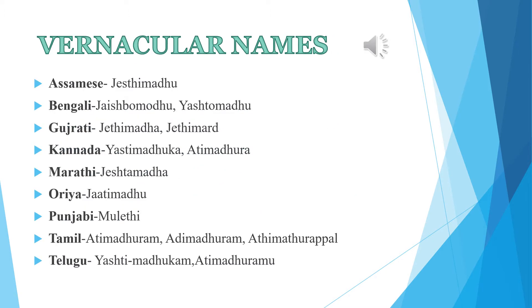Regional or vernacular names of Yashti Madhu: In Assamese, it is called Jaishti Madhu. In Bengali, it is known as Jaishbomadhu or Yashtomadhu. In Gujarati, it is called Jaishti Madhu. In Kannada, Yashti Madhu and Ati Madhu. In Marathi, Jaishtamadha. In Oriya, Jati Madhu. In Punjabi, Muleti. In Tamil, Ati Madhu.